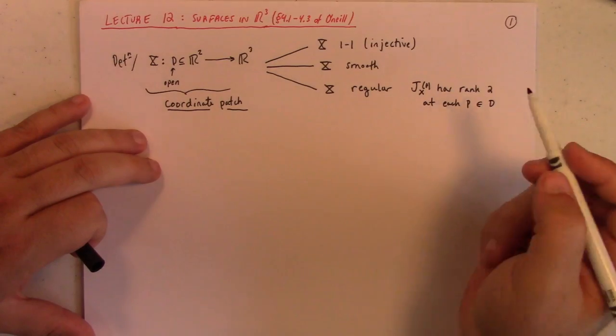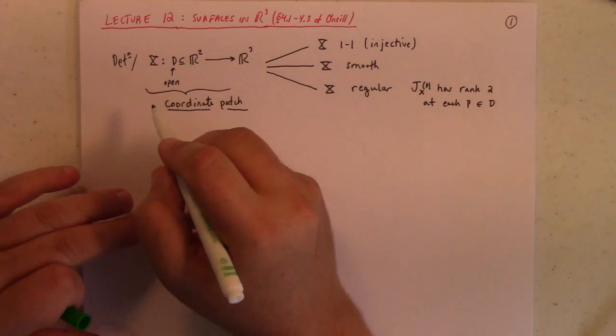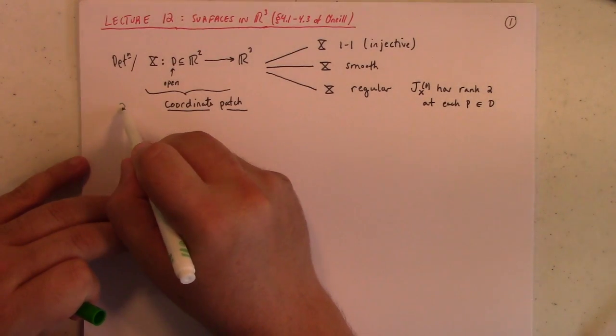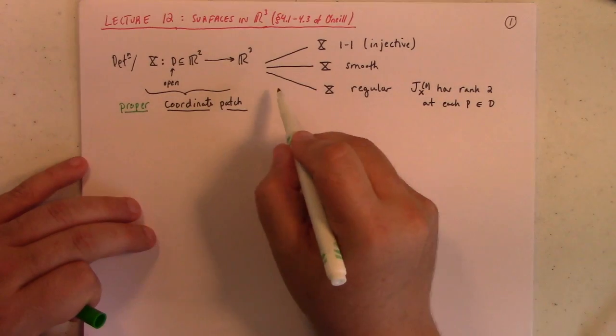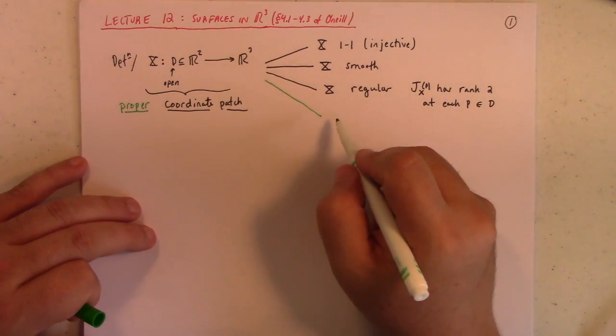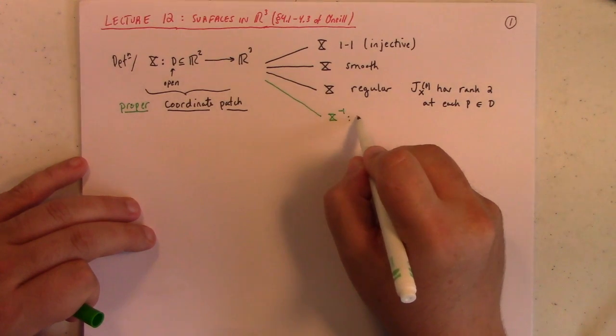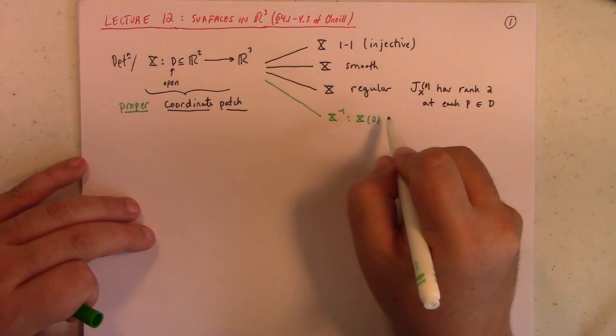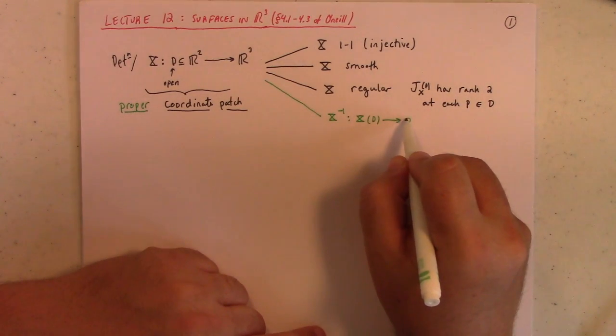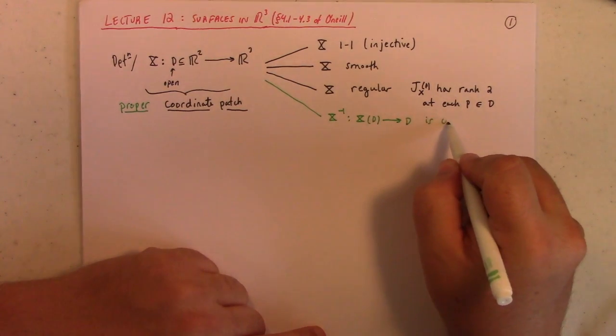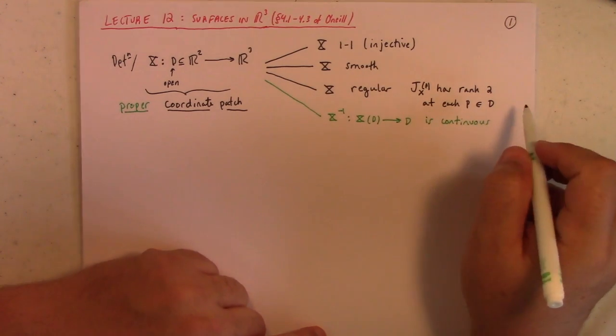And then, all this together just gives you a coordinate patch. We say it gives you a proper coordinate patch. If you have one other condition. If you also have that the inverse mapping, which of course would go from the range of X, the image of the patch, back to D, is continuous. Now, that, it turns out, helps you to avoid those self-intersection examples like I was showing you a second ago.